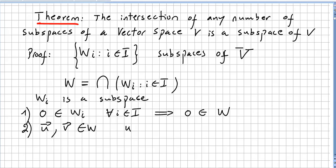So if they are in W, so u and v will be here in W, will be here in the intersection for every i in I.